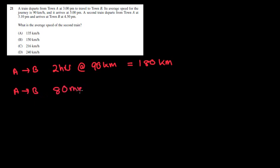Question, or the third question is question 21. A train departs from town A at 3 p.m. to travel to town B. Its average speed for the journey is 90 kilometers, and it arrives at 5 p.m. So it takes two hours at 90 kilometers per hour, which means it has gone a whole total distance of 180 kilometers. That's from town A to town B.